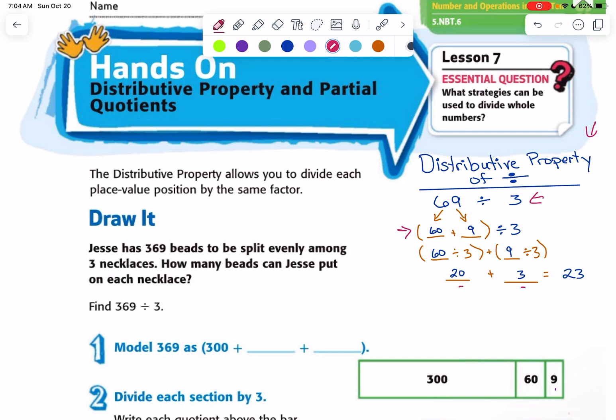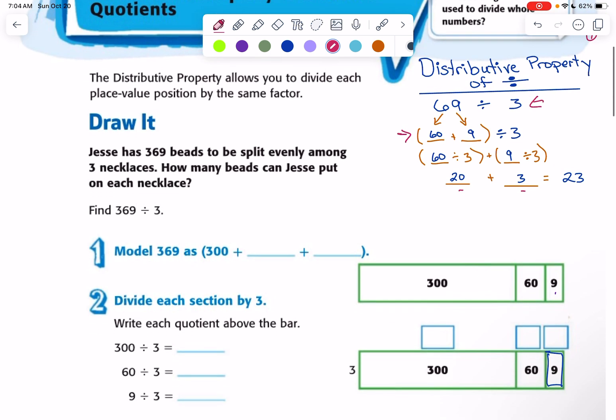Let's take a look at how that works in a problem. Jessie has 369 beads to be split evenly among 3 necklaces. How many beads can Jessie put on each necklace? So we can see that we need to divide the 369 beads by the 3 necklaces to find out how much each necklace can have.